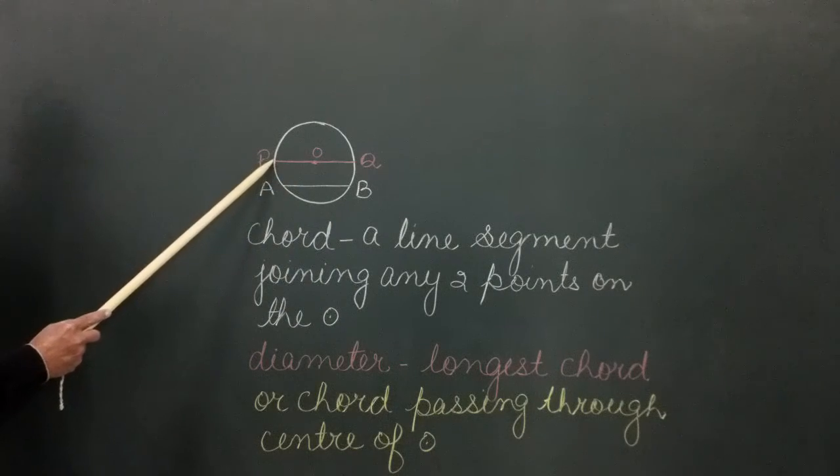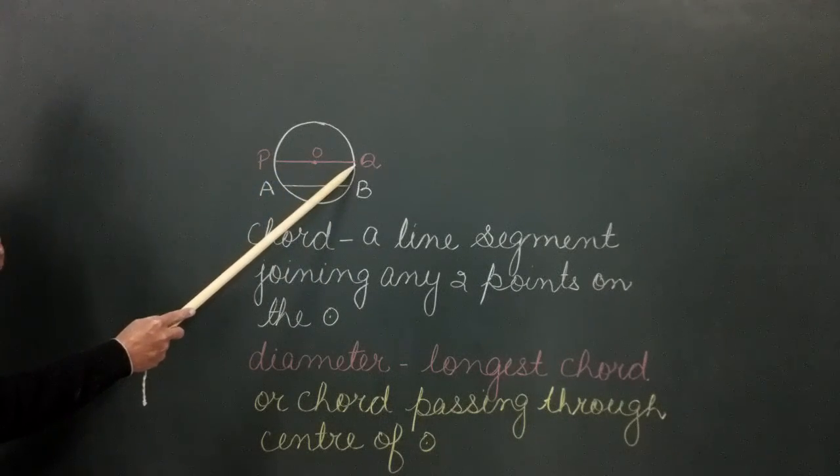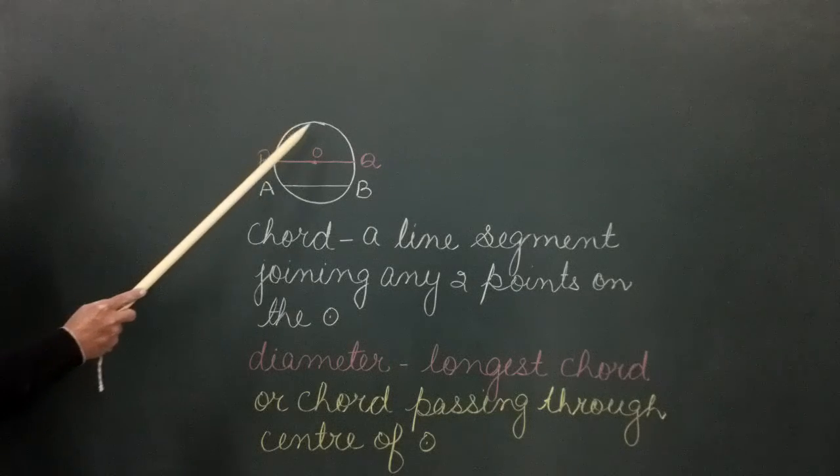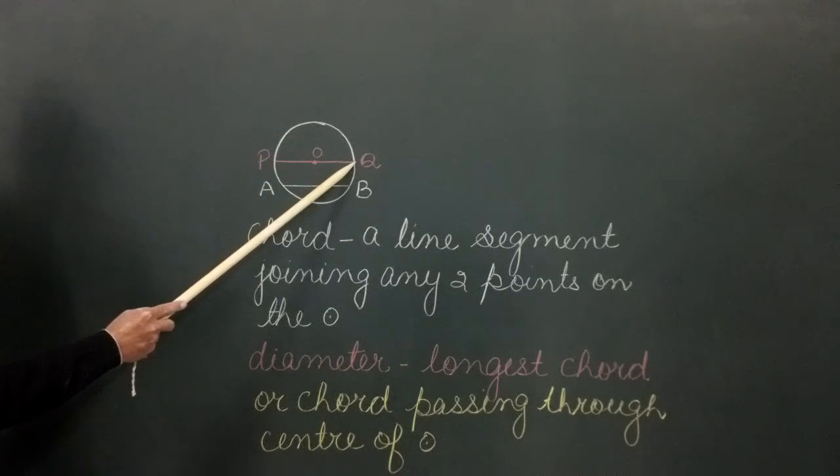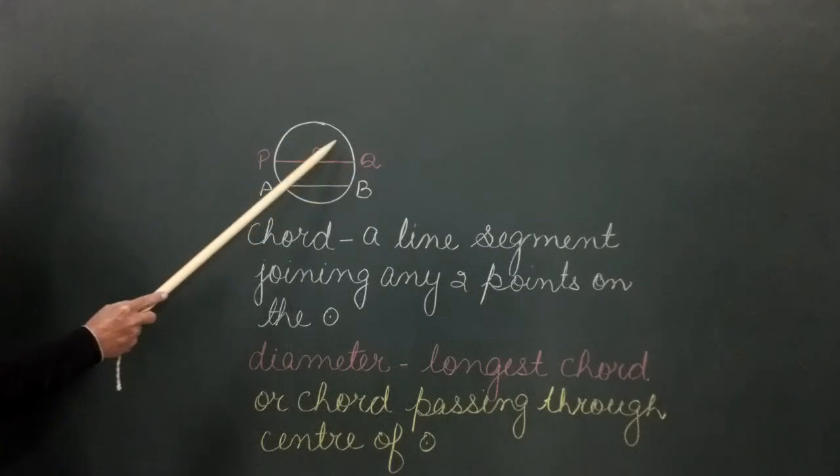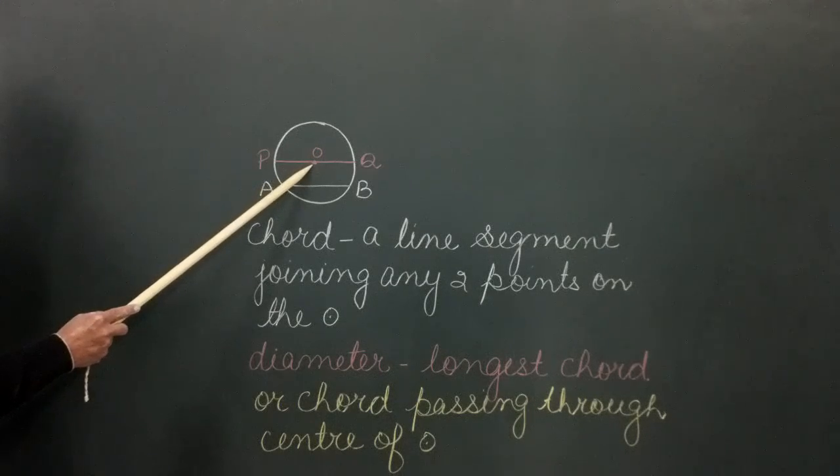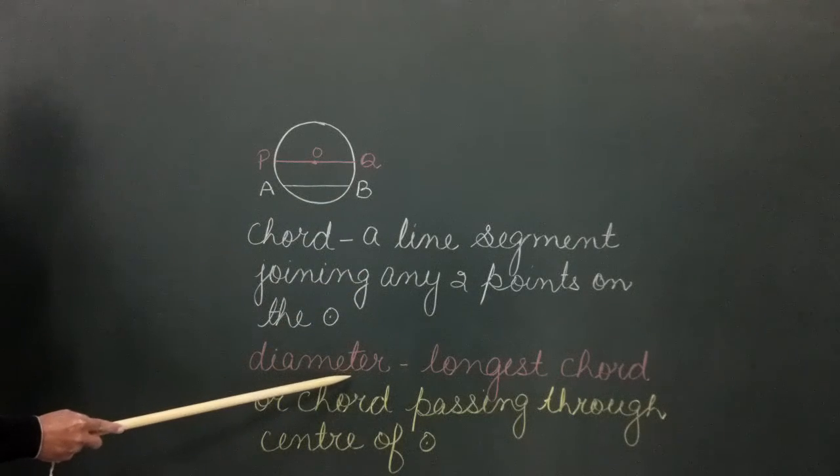Again we see a line segment PQ. It is also joining two points on the circle, but in addition it passes through the center of the circle. This type of line segment is called a diameter.